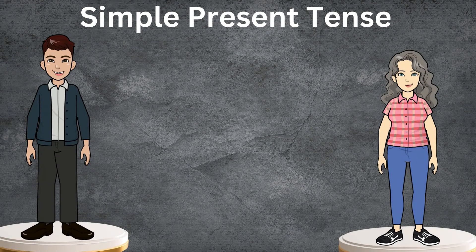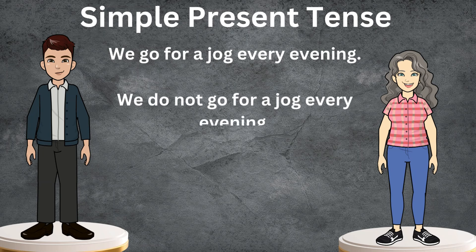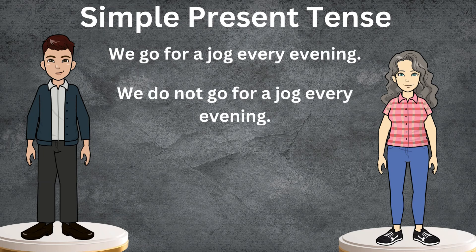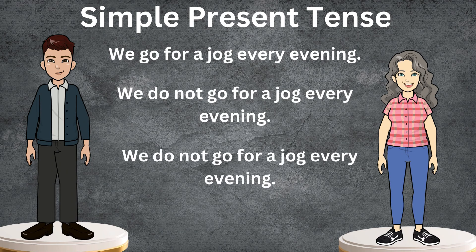Now, here are some examples of how we can use simple present tense. We go for a jog every evening. This is a simple affirmative sentence. Now let's convert the same sentence to a negative sentence first, and then to an interrogative sentence. My friend Hannah is going to help me. The negative sentence would be: we do not go for a jog every evening. The interrogative one is: do we go for a jog every evening?